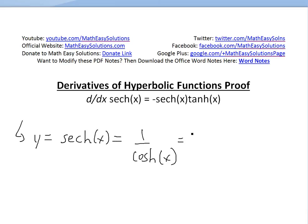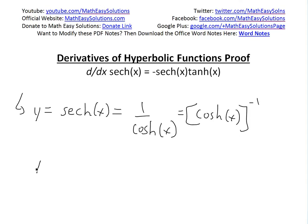And we can simplify this further for the derivative. This would just equal hyperbolic cosine of x, or cosh of x, to the power of negative 1. So when we take the derivative,